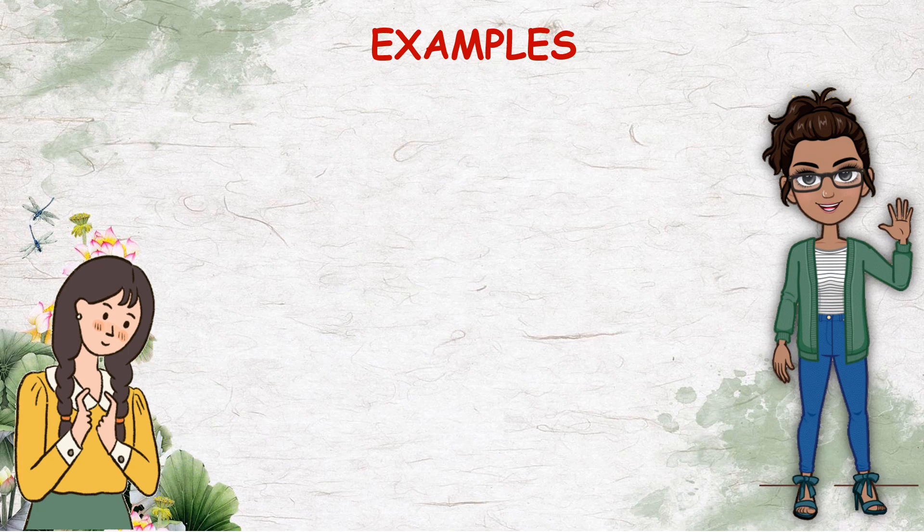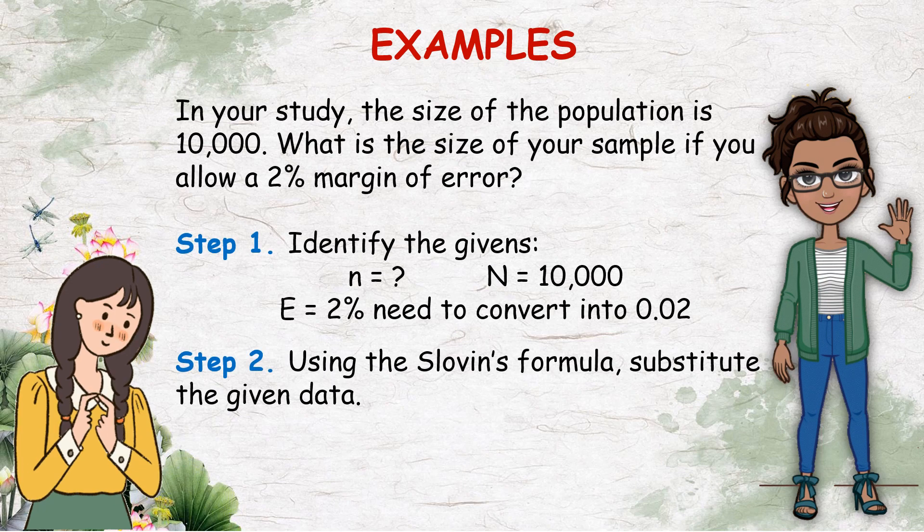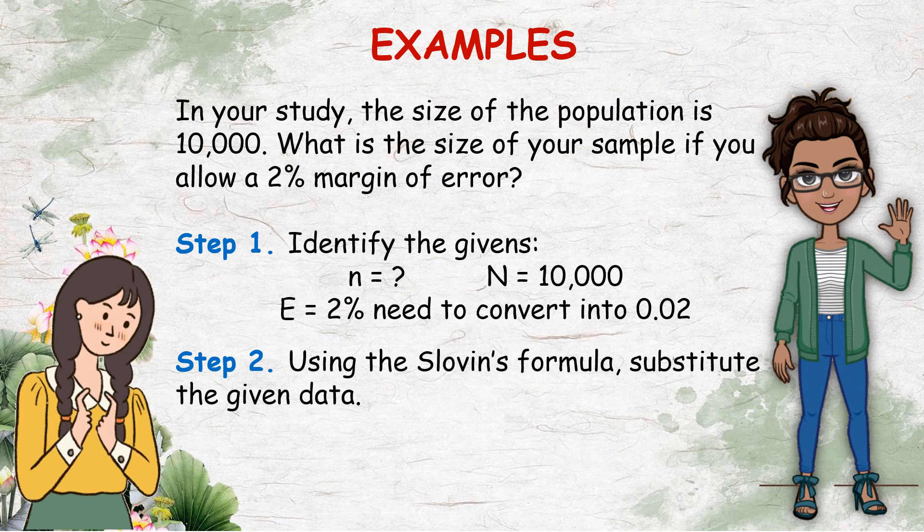Okay, so let's have another example. In your study, the size of the population is 10,000. What is the size of your sample if you allow a 2% margin of error? Step 1, identify the given. So we are about to get the sample size. The population is 10,000. The E or the margin of error is 2%. And then convert it into decimal form, which is 0.02.